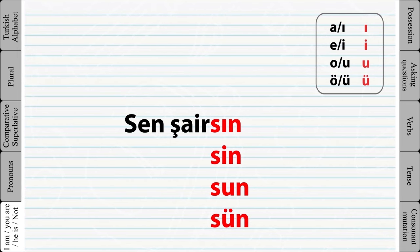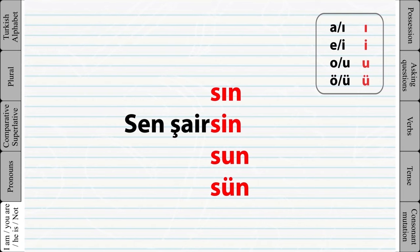Let's look at another example. Again, because the last vowel of this word is 'ı', that's why 'sın' is used.